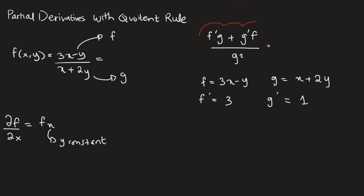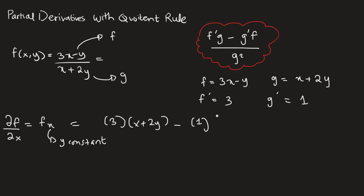Now let's plug into the formula — and I'm sorry, I put a positive here, it should be negative. So we have f prime times g, which is 3 times (x plus 2y), minus g prime times f, which is 1 times (3x minus y), all over g squared, which is (x plus 2y) squared.